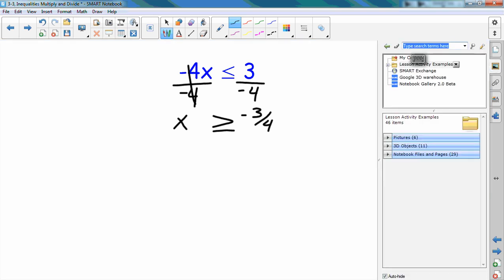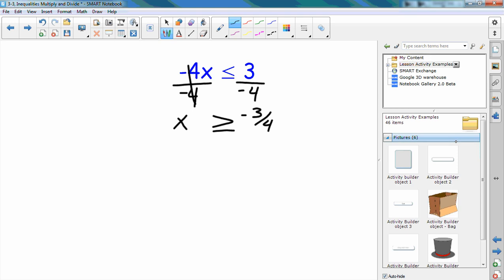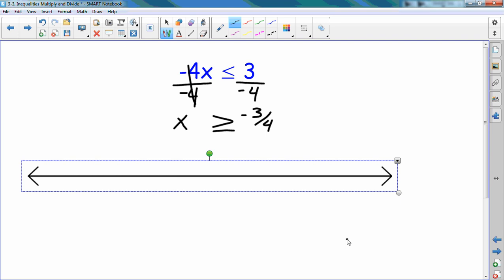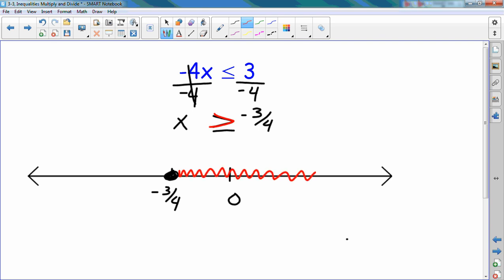When I go to graph that, I'm going to have, remember, I just need to mark three things. I need to put a 0 on there, and I need to do my negative 3 fourths. It's going to be a solid dot. And which way is the sign going? Going that way. I'm going to flip the direction of this sign, and it'll be which way to go.